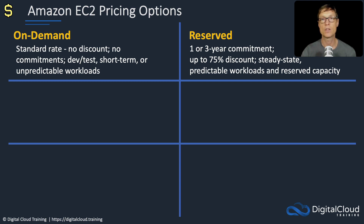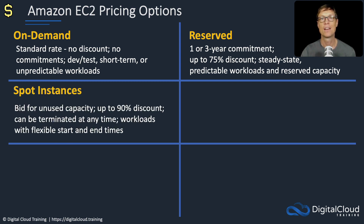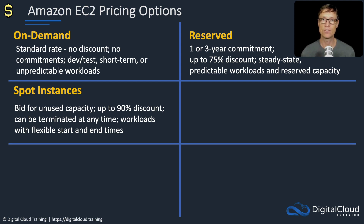You can also reserve capacity with reserved instances. Next up, we have spot instances. This is where you're bidding for unused capacity. AWS has huge data centers that aren't always fully utilized, so there's lots of unused capacity you can bid on. You can get discounts up to 90% — really big discounts. But the catch is that your instances can be terminated at any time, with a short notification. You need workloads with flexible start and end times, and the application logic needs to be able to recover from terminated instances.